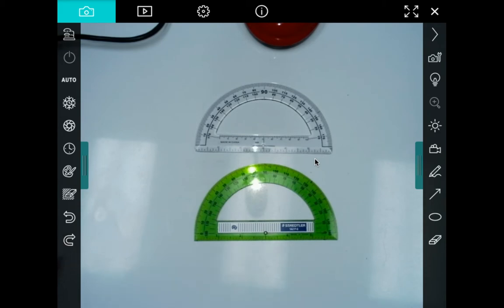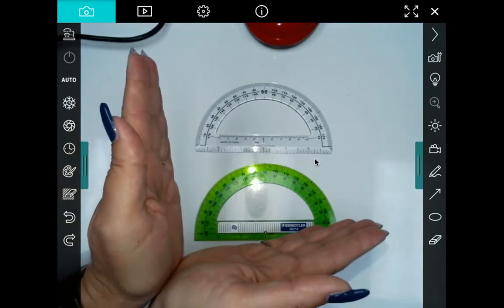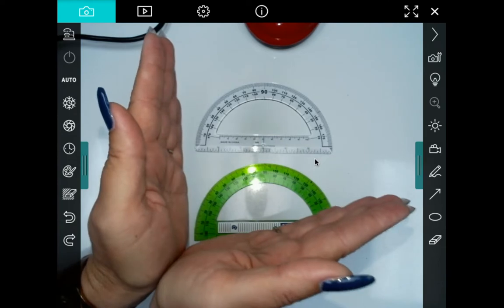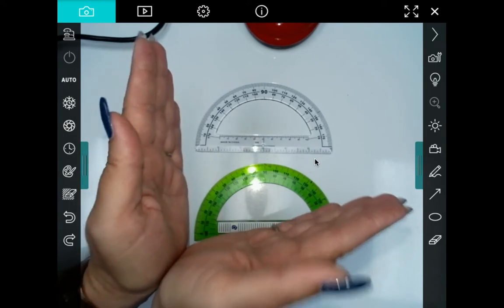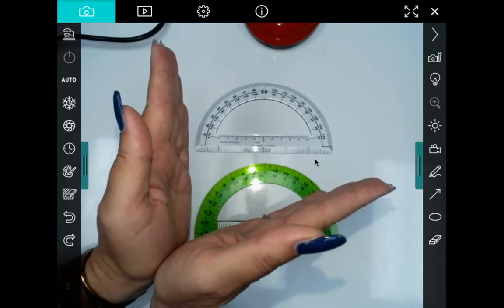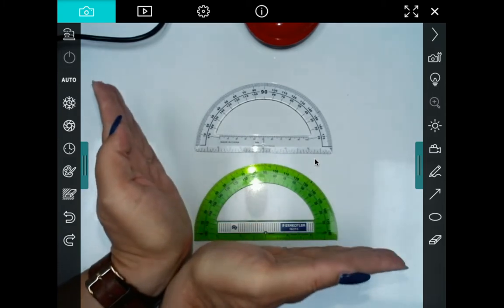A protractor is used for measuring the width of angles. Okay, so an angle is when two rays start at one point, that's the center part right here, and they go out and angles can be small or angles can be big.